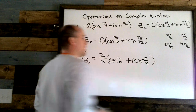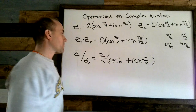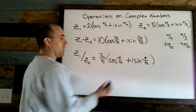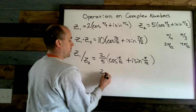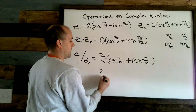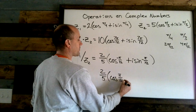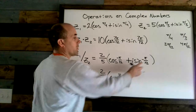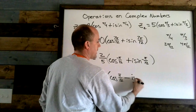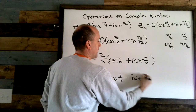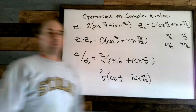Remember that we can't leave a negative angle. With cosine, the negative just disappears, so we get (2/5) times cosine of π/12. With sine, the negative moves out front, so it becomes minus i sine of π/12. And that's that.